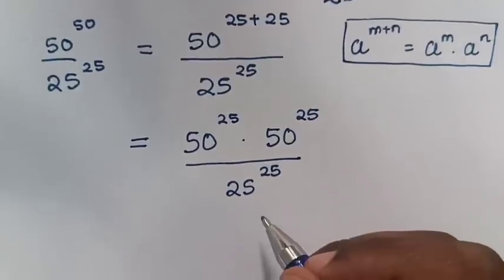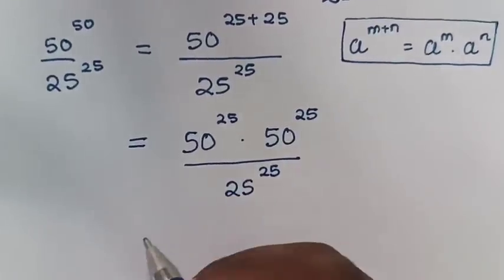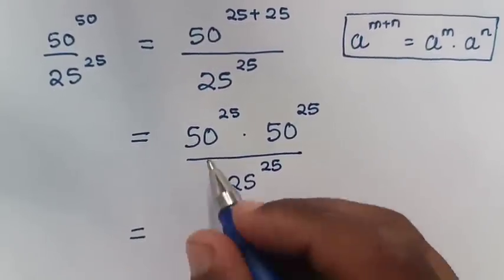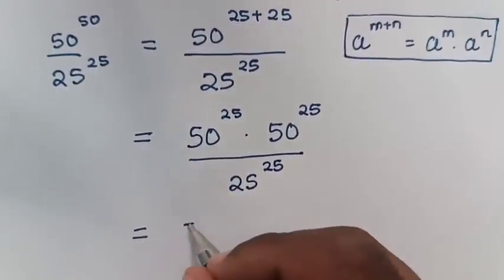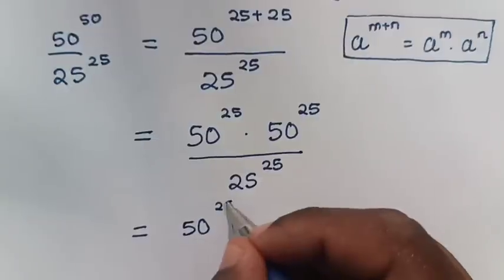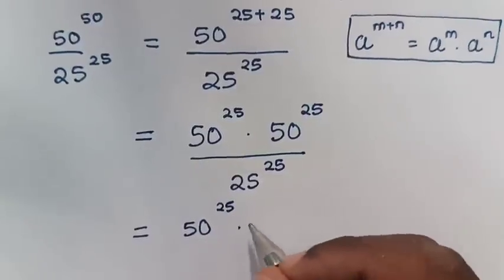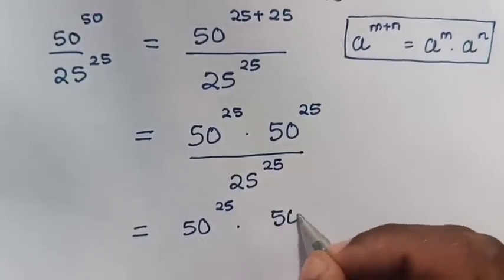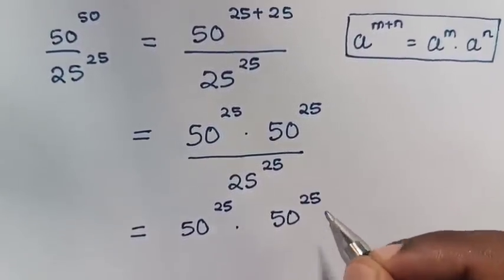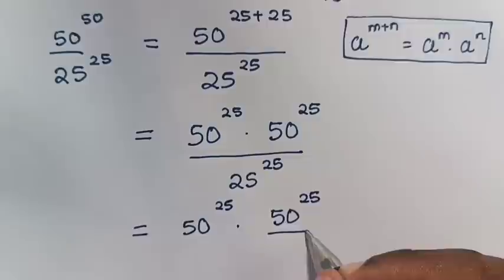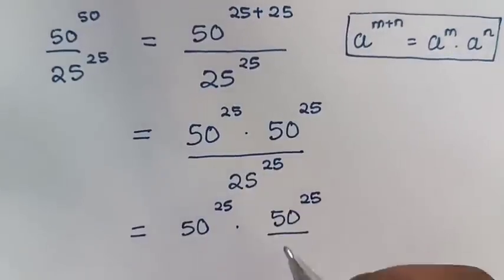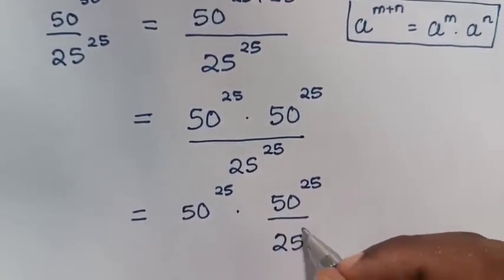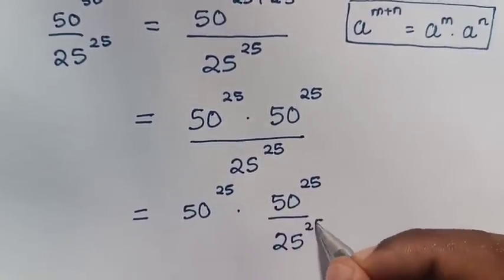From here, this is equal to 50 power of 25 times 50 power of 25, over 25 power of 25.